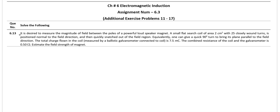The question is, it is desired to measure the magnitude of magnetic field between two poles of a powerful loudspeaker magnet. So we want to find out magnetic field. A small search coil of area 2 cm² with 25 closely wound turns is positioned normal to the field direction and then quickly snatched out of the region.